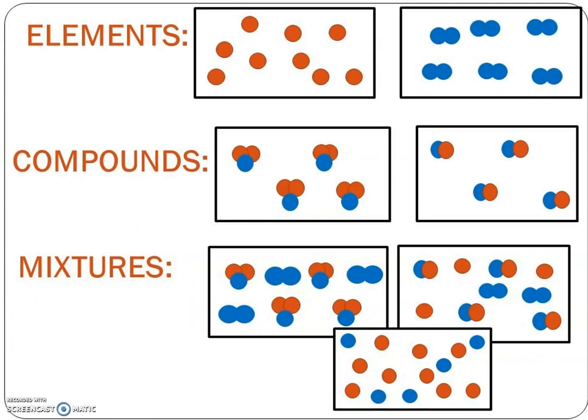And so oftentimes we will show you these diagrams where different circles mean how many elements there are. Different colors also mean different elements. So for example, with elements, you can have one that's orange. Let's say that that's like pure carbon. And then let's say in the blue, you have hydrogen. So hydrogen is usually found as H2, and they're bonded together. They're still elements. Even though this one is bonded with the other, it's still the same element.